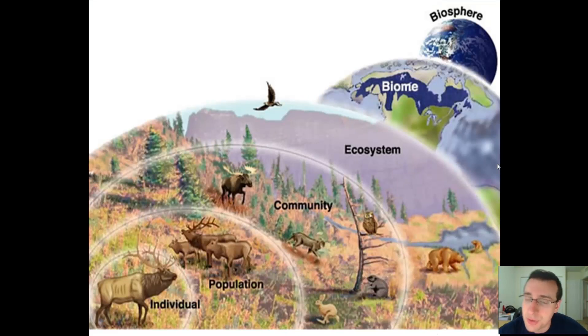The biosphere, which includes all of the life on earth, is split into different areas or different kinds of ecosystems like rainforests, deserts, taiga, and other things like that, which we call biomes.